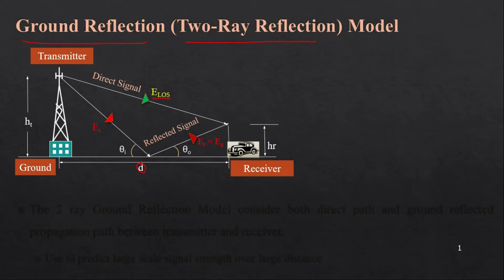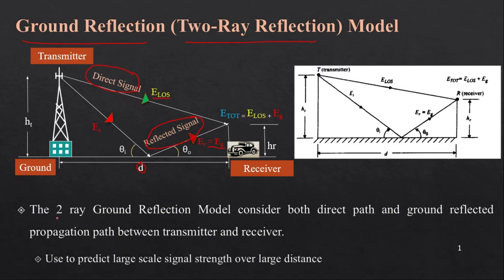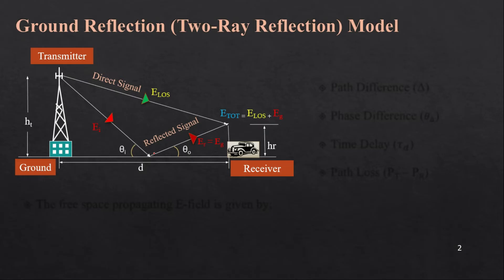This is the overall scenario for ground reflection. The signal is reflected from the ground — we see two rays: one direct signal and one reflected signal, hence the name two-ray model. In this model, we calculate the total electric field received, which is the vector sum of the line-of-sight signal and the ground reflected signal. The two-ray ground reflection model considers both the direct path and ground reflected path between transmitter and receiver, and is mostly applied to large-scale signal strength over large distances.